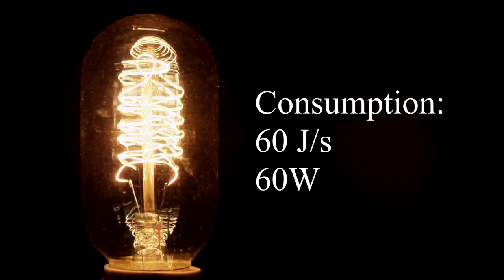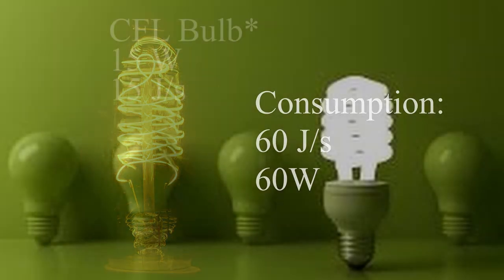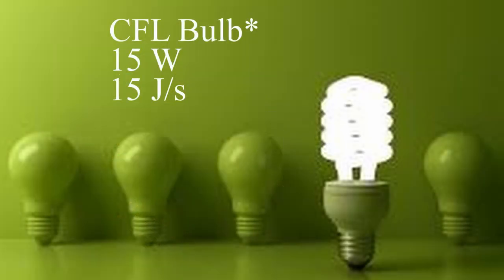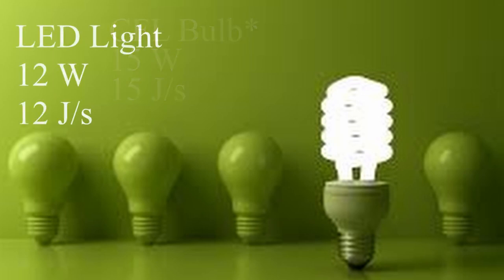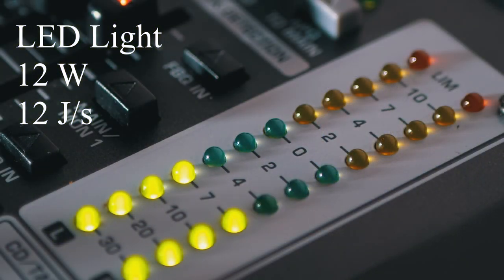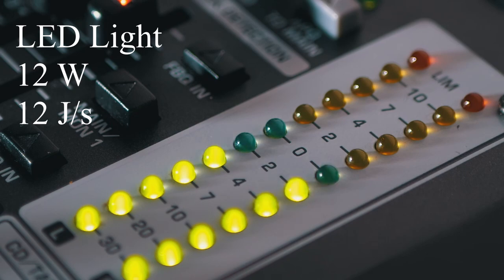A conventional classic light bulb consumes 60 joules every second, which is 60 watts. A CFL bulb will have a power of 15 watts, which is 15 joules per second, and an LED bulb will have a power of 12 watts, or 12 joules per second. You can see why it costs more to run a conventional light bulb than an LED — the LED consumes much less electrical energy.